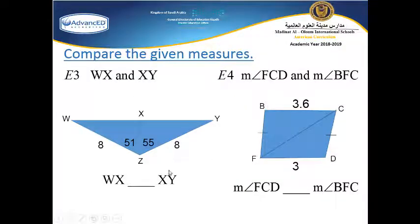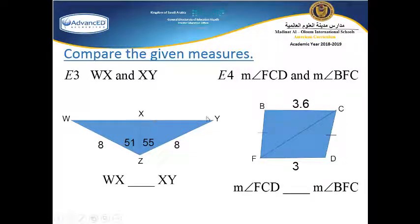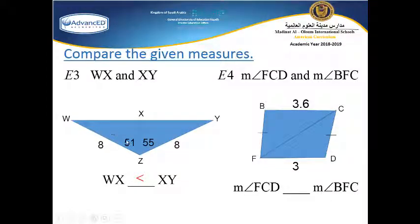Here, let's compare the given measures WX and XY. Side WX is opposite to the smaller angle 51°, and side XY is opposite to the larger angle 55°. Therefore, WX is less than XY.